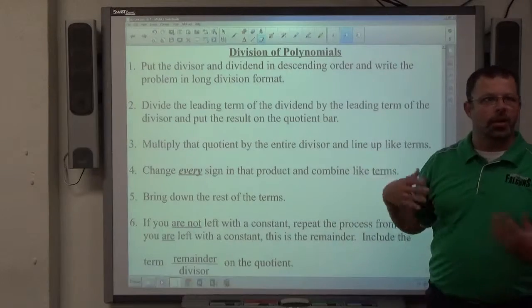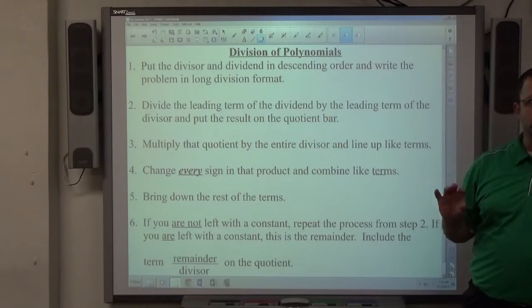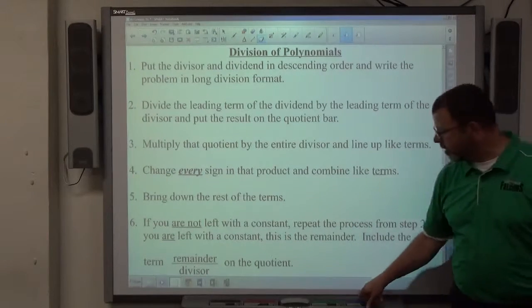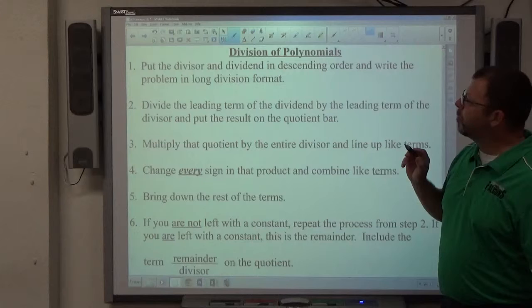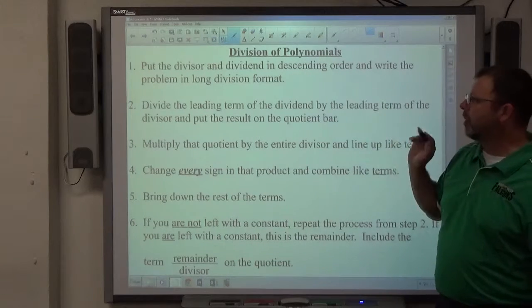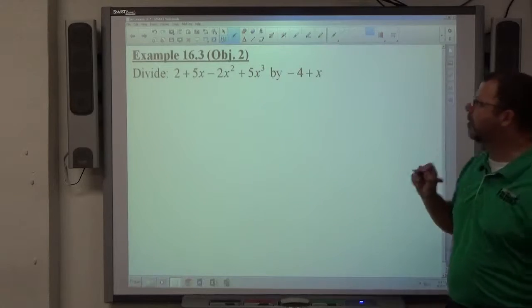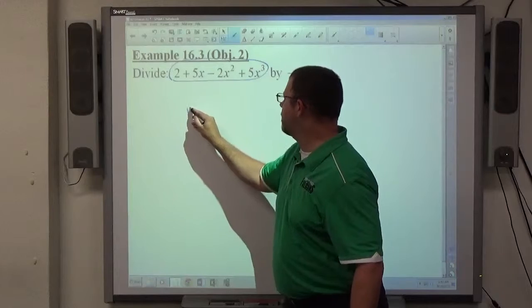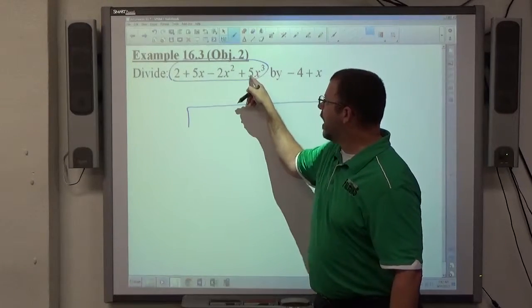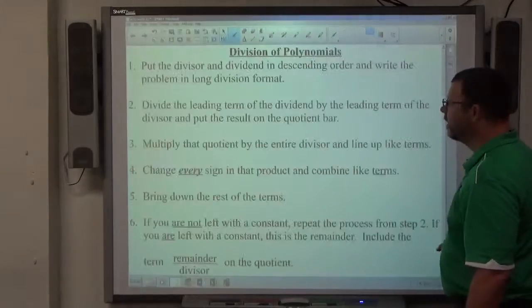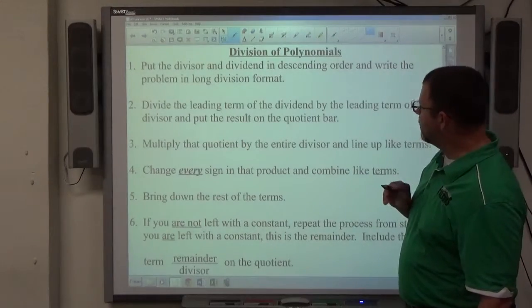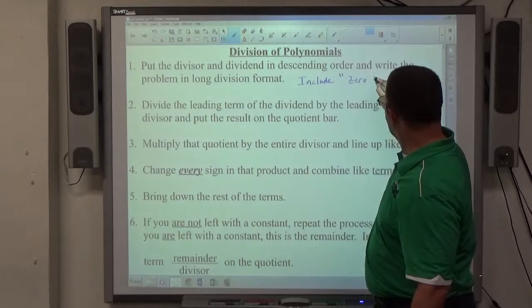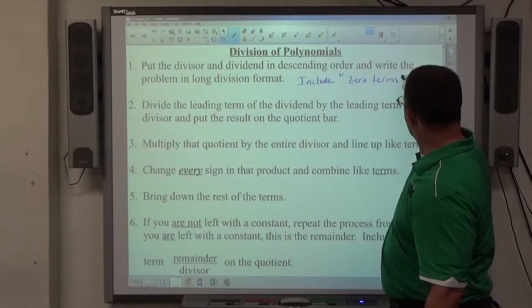The division process is long division, but it's abstract, so sometimes it's a little confusing. I'm going to hopefully show you the places where you need to pay extra close attention so you don't mess up. First thing is to put the divisor and dividend in descending order and write the problem in long division format. This is the dividend. It goes inside my quotient bar, descending order, highest power to lowest power.